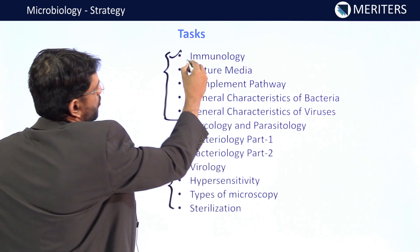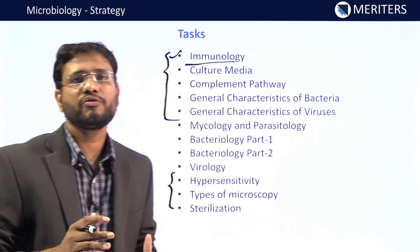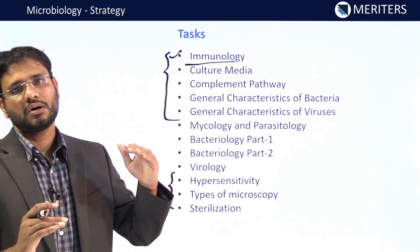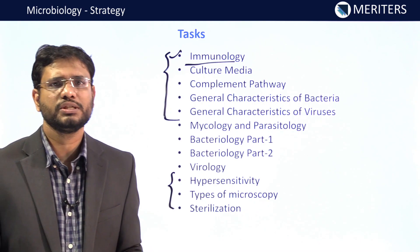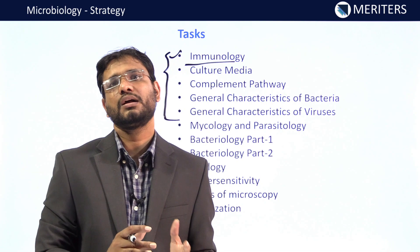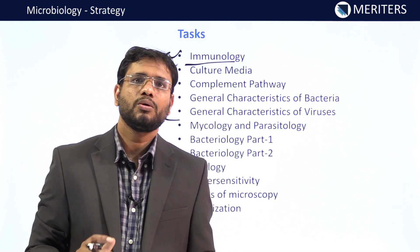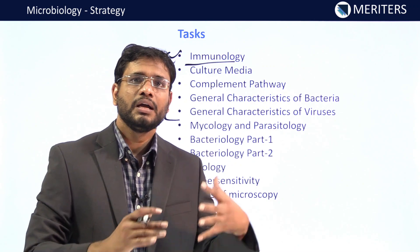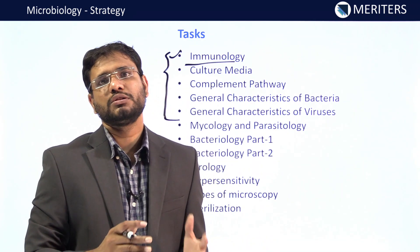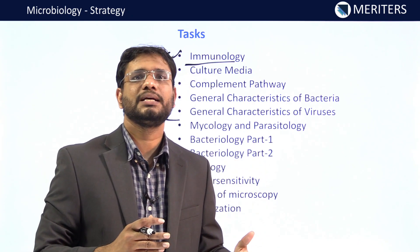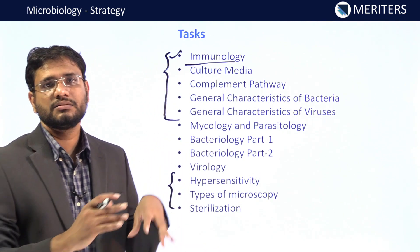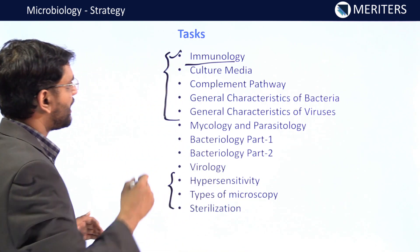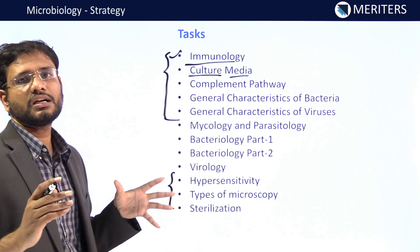Starting with immunology: many questions are asked here, and the same overlapping concepts appear in pathology, making it important for both subjects. You are expected to learn basic immune functions, immunoglobulins, types of antigens, and which immunoglobulins predominate at which sites — for example, which immunoglobulin crosses the placenta, which is present in saliva, and which is secretory. These are basic questions frequently asked in NEET.